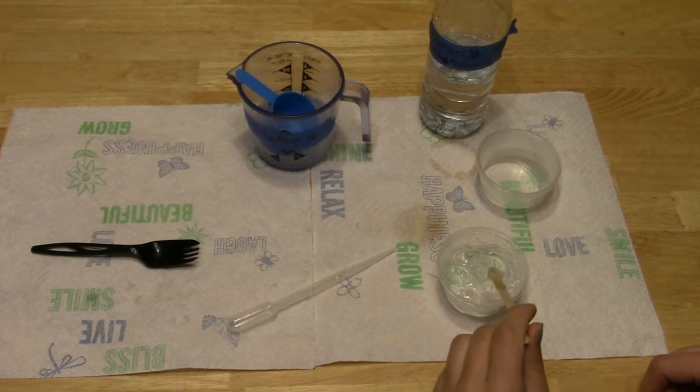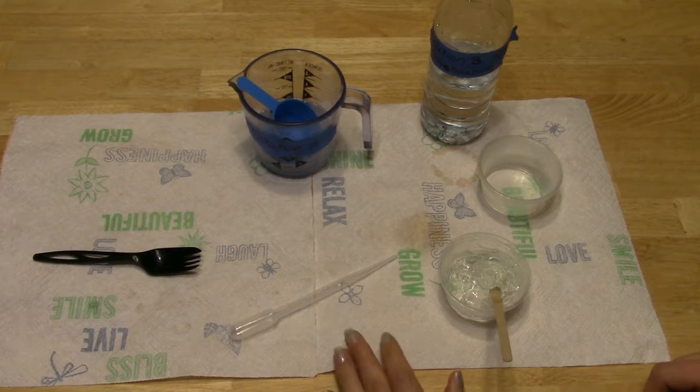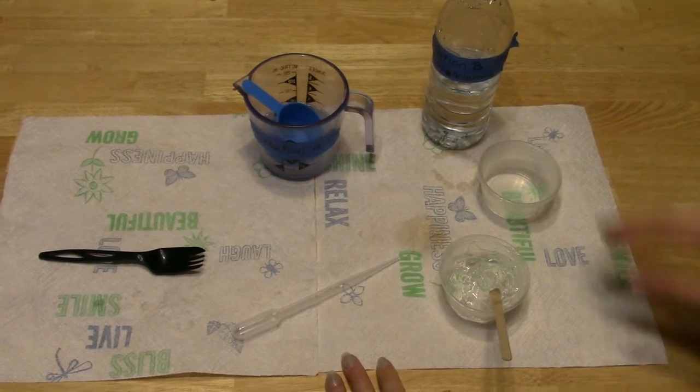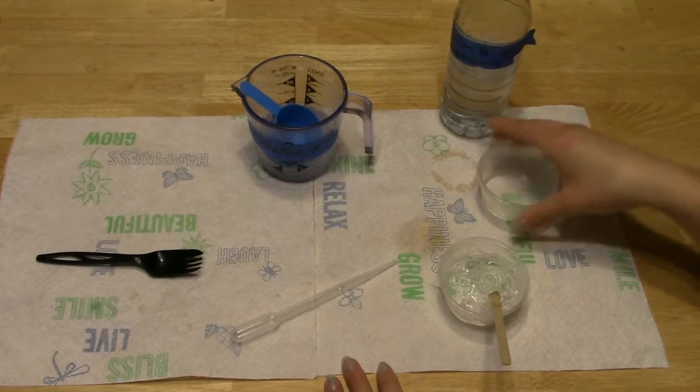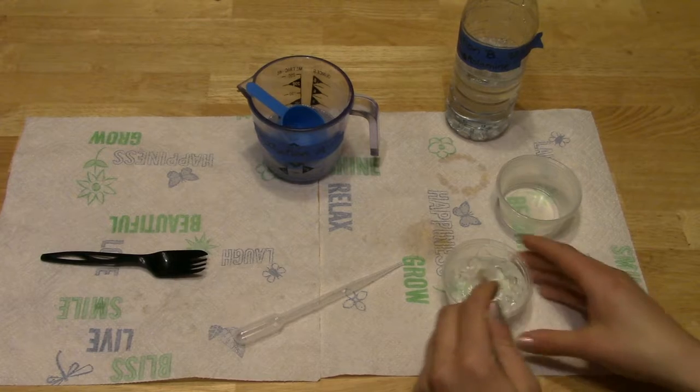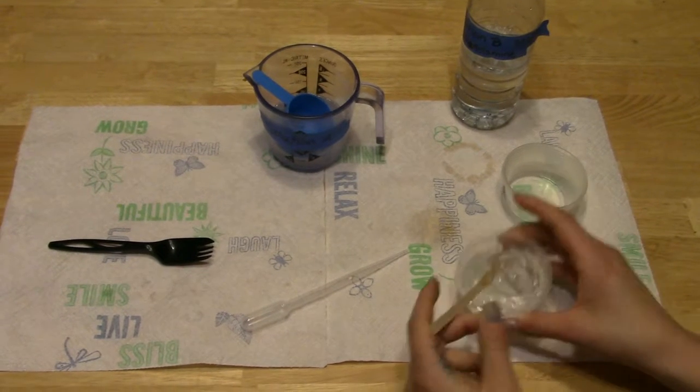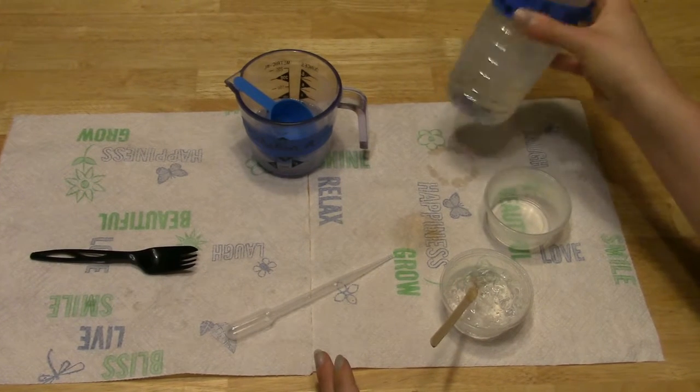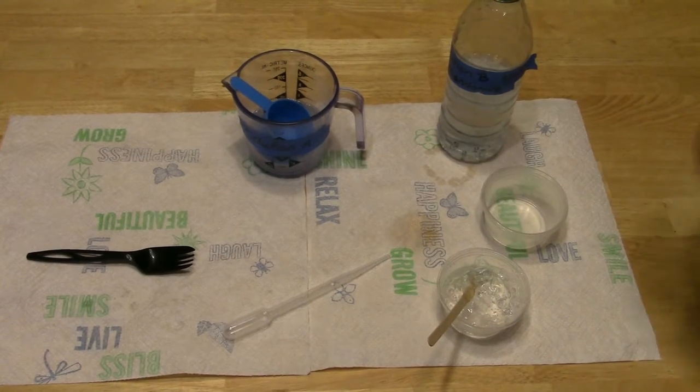For kindergarten through third grade, children generally understand the different states of matter. They understand liquids, solids, gas, and their general properties like solids tend to hold their shape, liquids take on the shape of their container, same with gas.